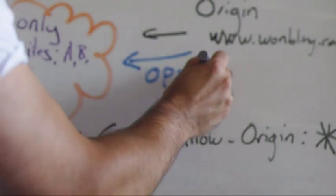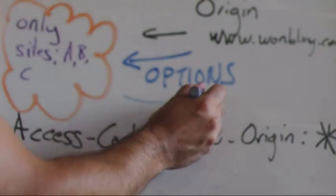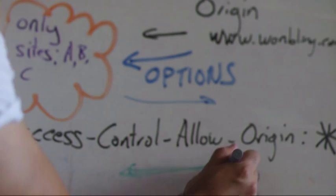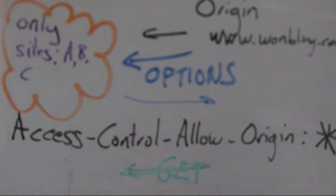First of all, you get an OPTIONS call coming in from the browser which says, yes, okay, these are the sites. The browser says, all right, okay good, you are one of the sites that I trust, so therefore I'm going to allow the GET to go through and everything's processed correctly.